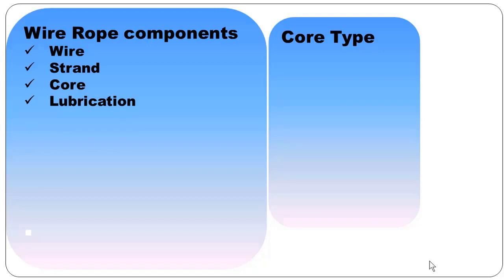Lubrication is a dope or grease that is used in between strands of a wire rope. This grease or dope will lubricate and will help the individual strands and wires to move independently when the load is lifted with this wire rope.